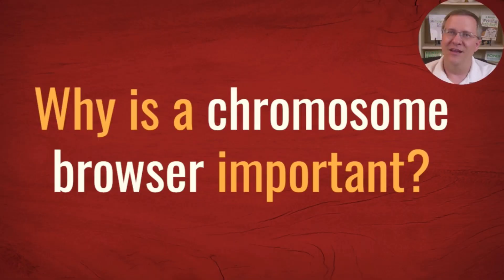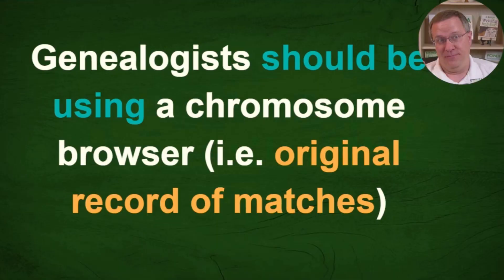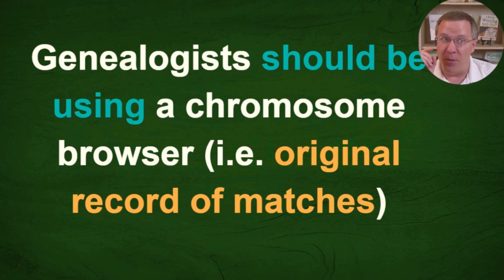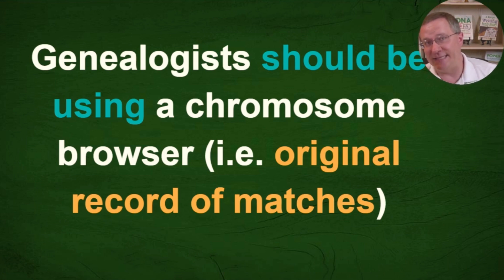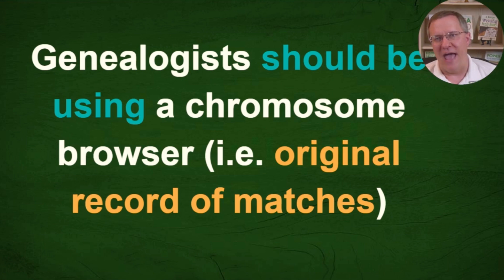Why doesn't Ancestry provide a chromosome browser? Before I can answer why Ancestry and Living DNA don't provide a chromosome browser, I must refer back to my previous video about the importance of chromosome browsers. The video is linked below. Genealogists should be using a chromosome browser — they should be looking at the original record of matches. That is why a chromosome browser is important. It is the original record of matches and contains the most data about that match. The index is just a condensed portion of that information.